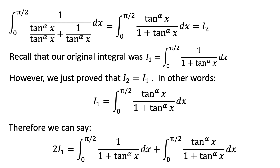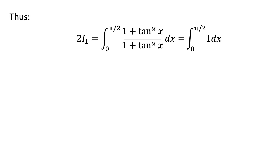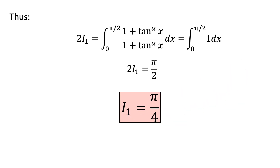Since these two integrals have the same limits of integration and the same denominators, I can combine them into a single term. Therefore, 2 times i1 is equal to the integral from 0 to pi over 2 of 1 plus the tangent of x raised to the alpha power over 1 plus the tangent of x raised to the alpha power with respect to x. Our integral simply becomes the integral from 0 to pi over 2 of 1 with respect to x. This means 2 times i1 is equal to pi over 2, and dividing through by 2 gives us our final answer: i1 is equal to pi over 4.